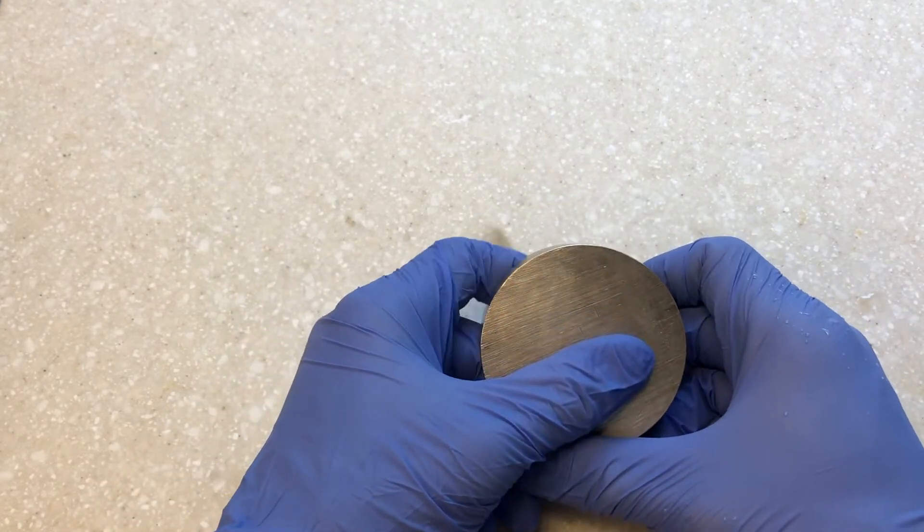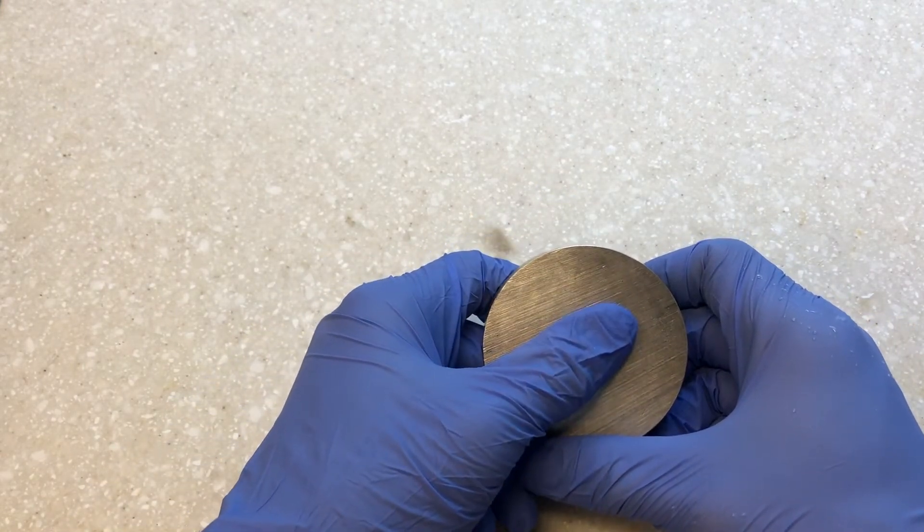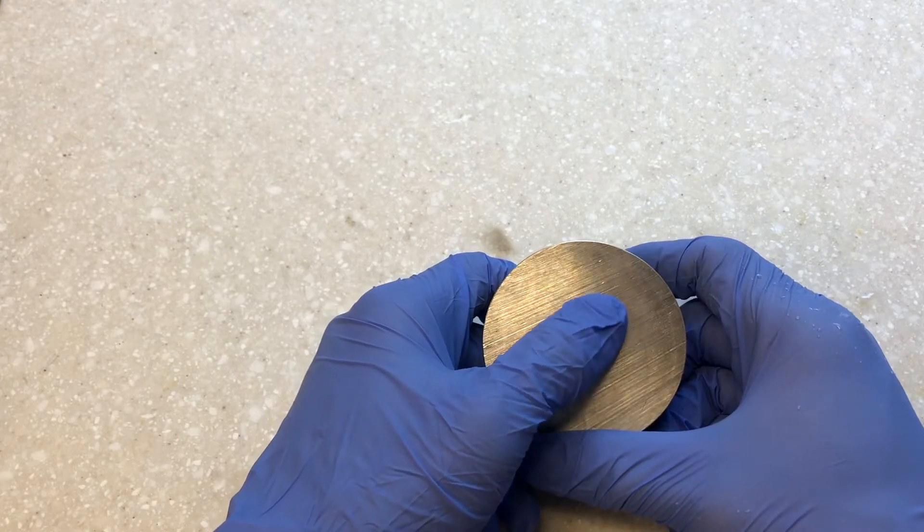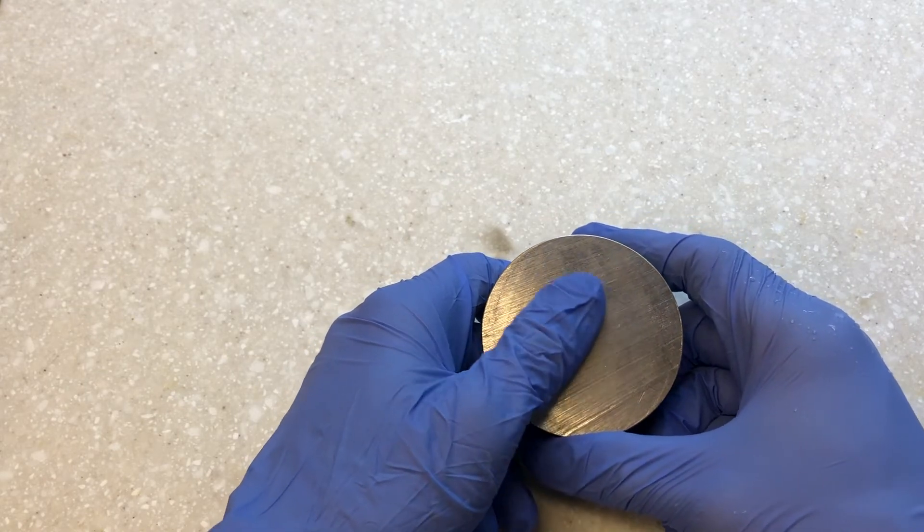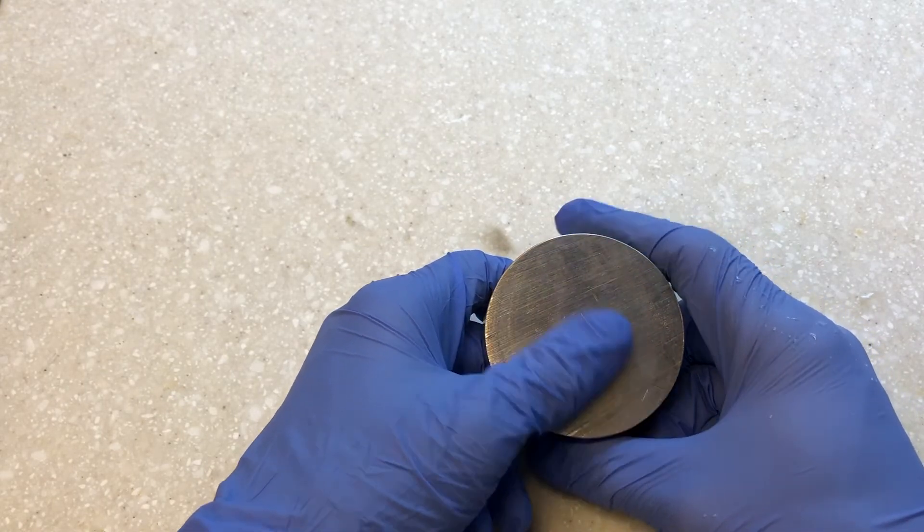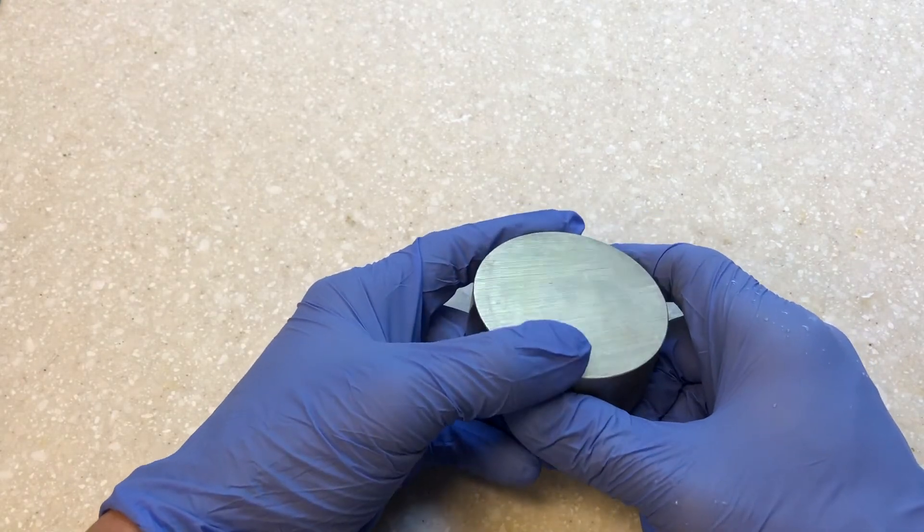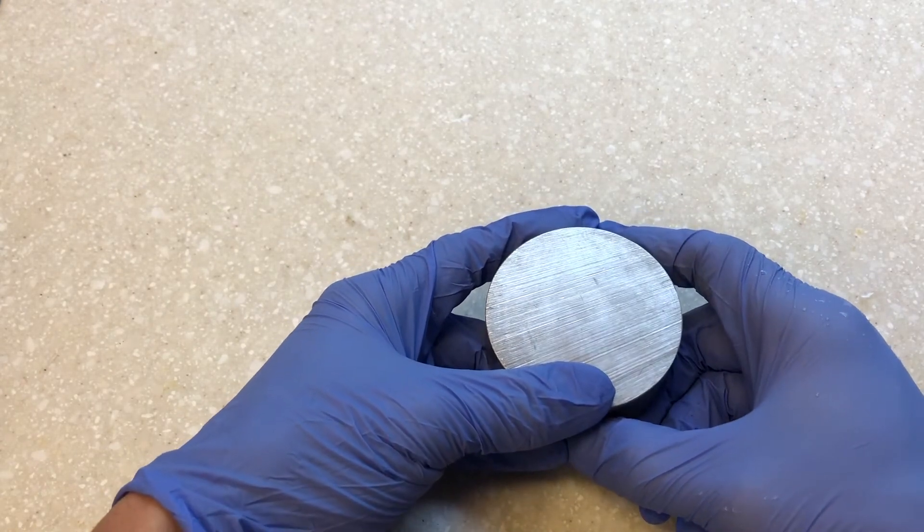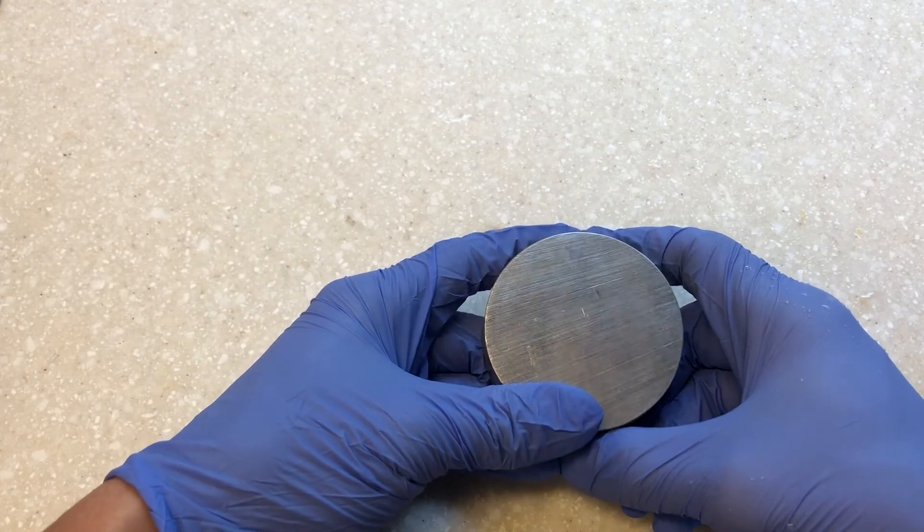Another good property of Monel is it can be easily worked through various processes, both hot and cold, can be easily machined and welded. Monel can be used at sub-zero temperatures to temperatures as high as 480 degrees Celsius, 896 degrees Fahrenheit.